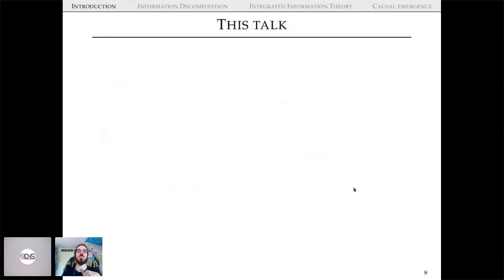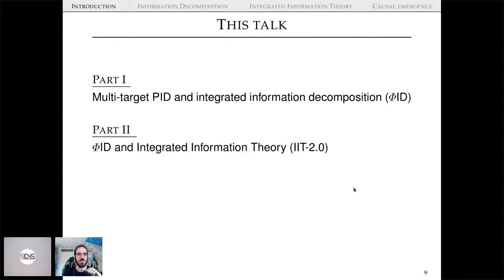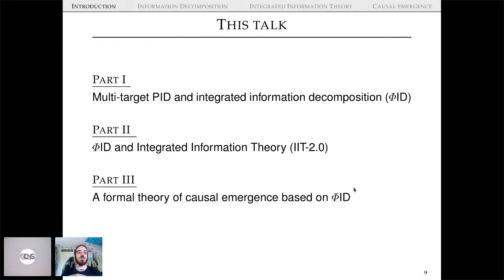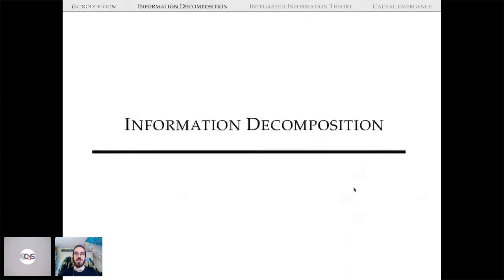For the rest of the talk: in Part 1, I'll introduce this multi-target PID we call Φ-ID — Integrated Information Decomposition. Then I'll talk about the relation between Φ-ID and integrated information theory, specifically IIT 2. In Part 3, if time allows, I'll discuss a formal theory of causal emergence based on Φ-ID. That topic was also covered in my main track talk with code 014.